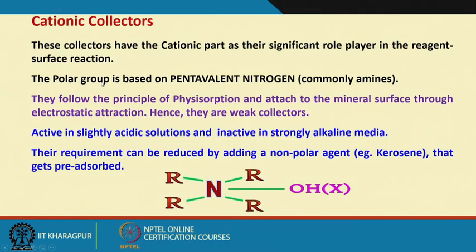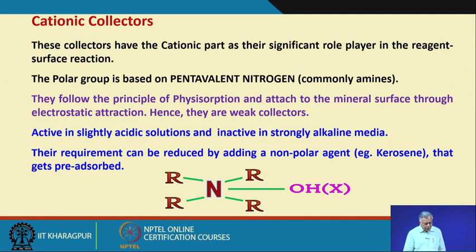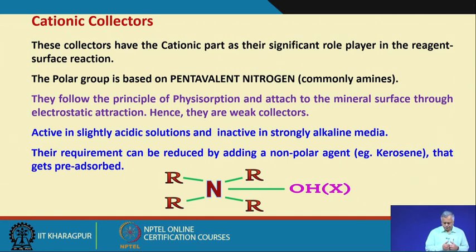The polar group — because you have to have a polar and non-polar group — is based on pentavalent nitrogen; they are commonly called amines. They follow the principle of physisorption. In anionic collectors they normally follow the process of chemisorption, and for cationic collectors they follow the principle of physisorption and attach to the mineral surface through electrostatic attraction. Since the attachment is electrostatic and not a surface reaction-based bonding, they are weak collectors — the bonding strength is weaker.